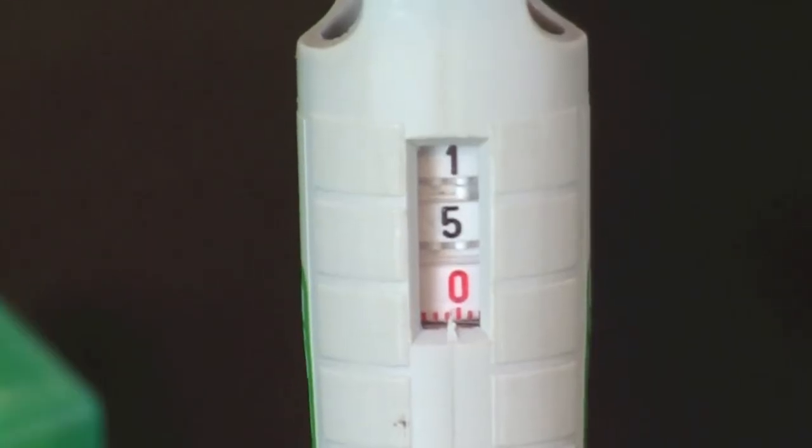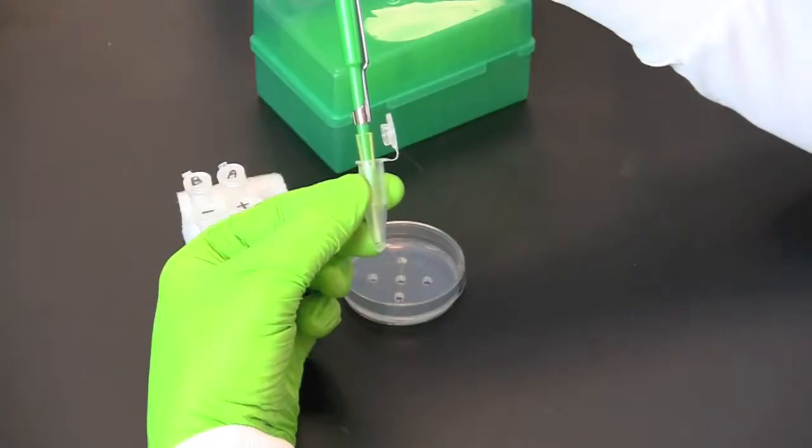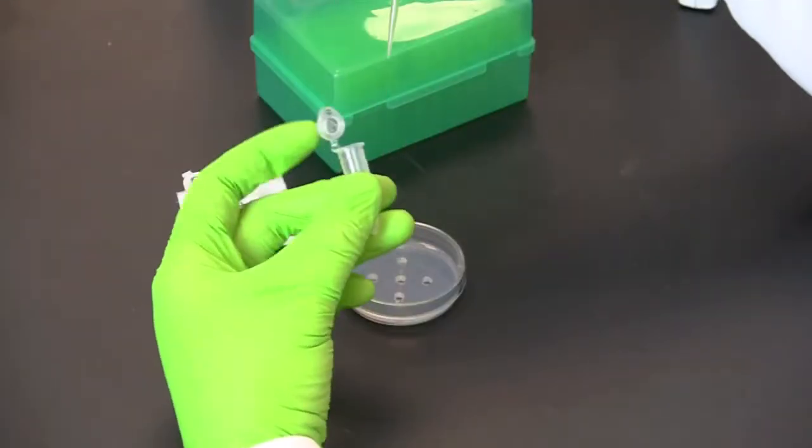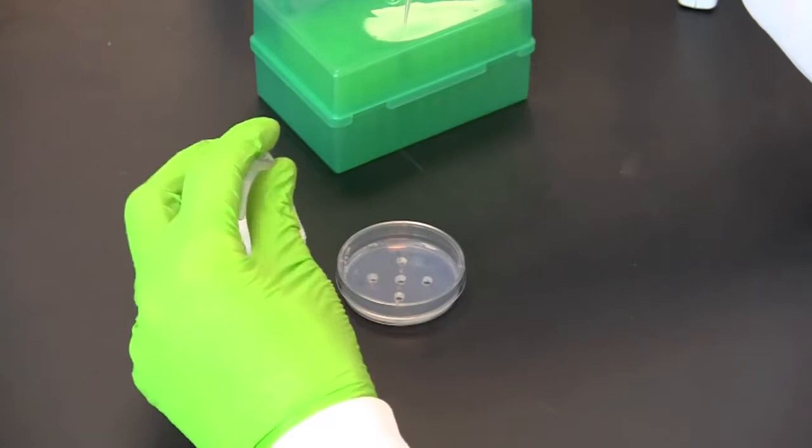Set a micropipette to 15 microliters and pipette 15 microliters of anti-chicken antibodies into the center hole.